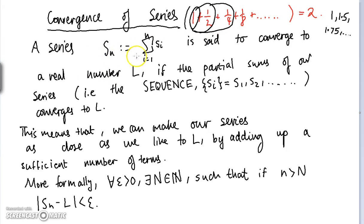More formally, a series Sn, which is given by the sum from i equals 1 to n of individual terms Si, is said to converge to a real number L if the partial sums of our series—that is, the sequence big S of i equals S1, S2, taking one term, two terms at a time, three terms at a time, et cetera—if this sequence converges to L, then our entire series converges to L.